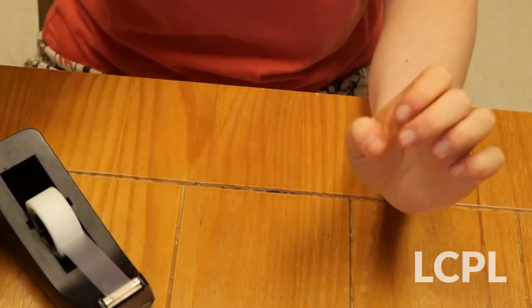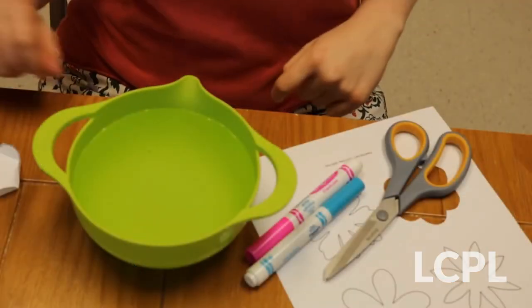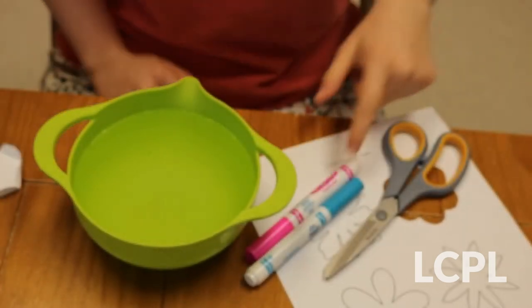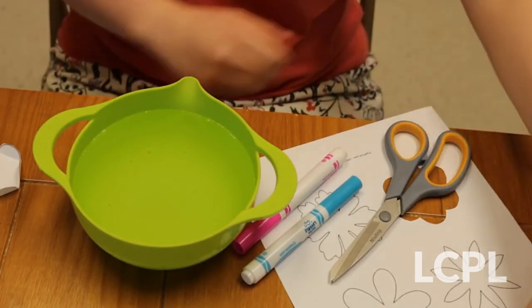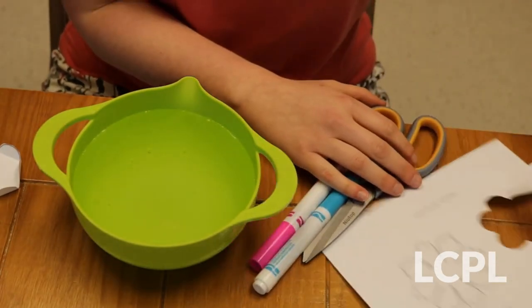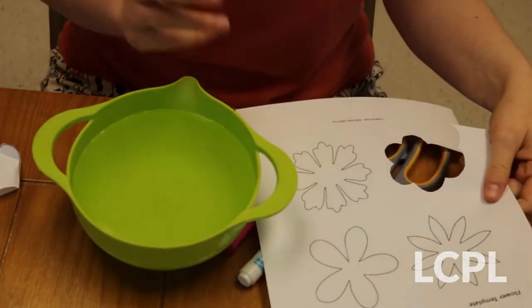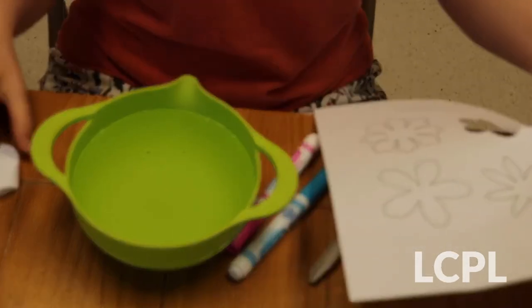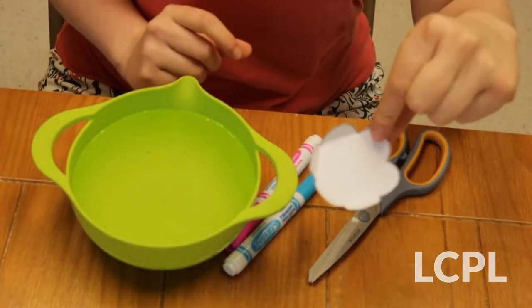All right, so for our next craft we are going to make a flower bloom at any time of year. So what you'll need for this craft is a bowl of water, some markers, scissors, and of course a piece of paper. For the paper you can either find templates online—you'll want to find ones that are in flower shapes and where the petals are about symmetrical and even—or you can always draw one yourself. So I have gone ahead and printed out this flower template and cut out my own little flower.